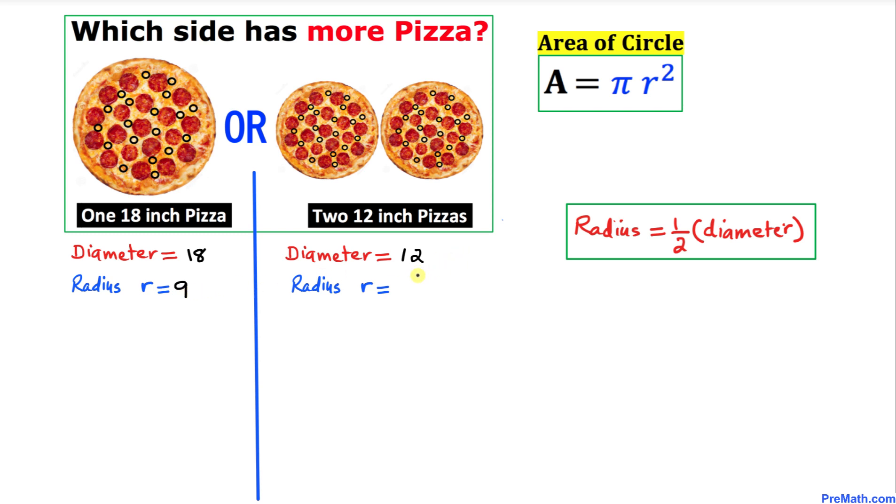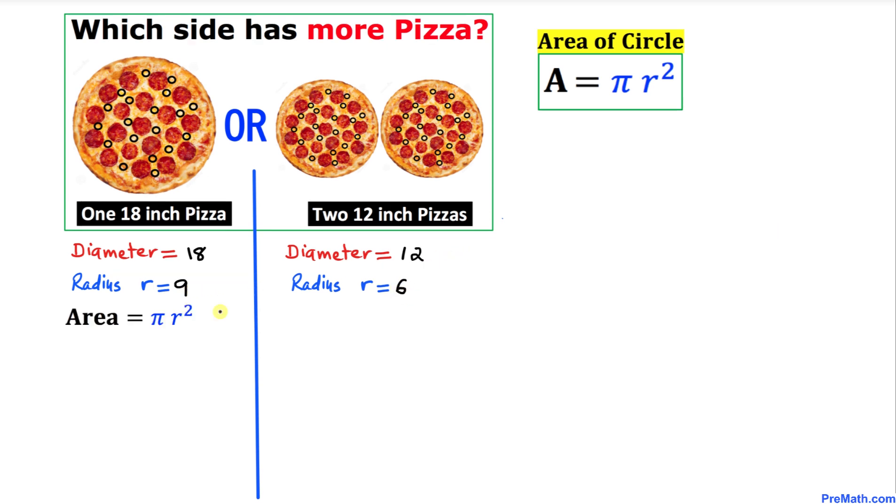So the area is going to be π times r². In our case, r is 9, so area turns out to be π times 9², which equals 81π. We know that π has a value of 3.14.